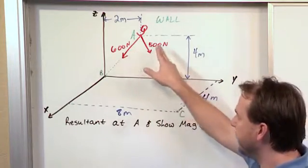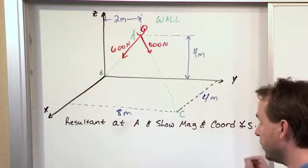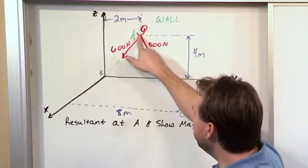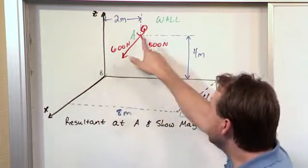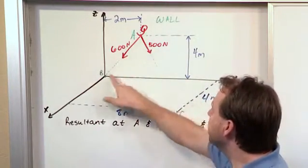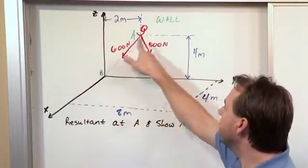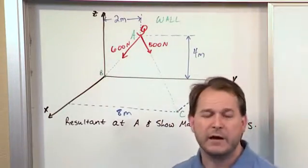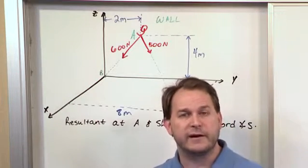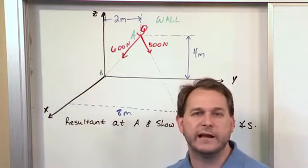First, we know that we have two vectors. So we know that because they both start at A and they end at different places, that we should be able to figure out what the force vector is along both or along each of these lines separately. We should get a Cartesian vector as a result of each of those just like we did in the last problem.